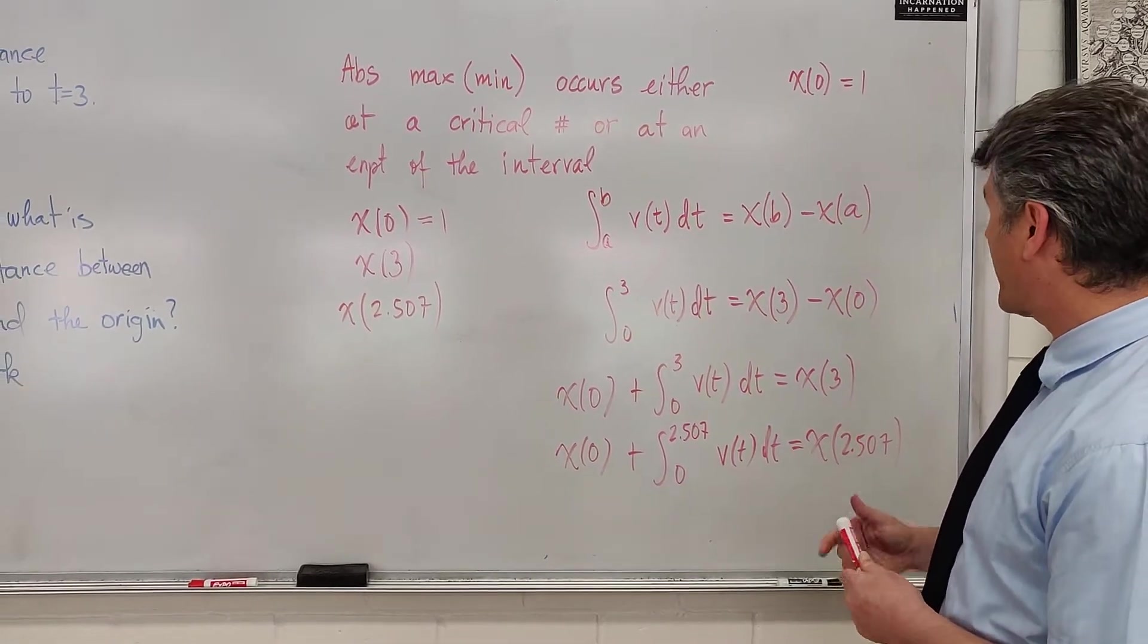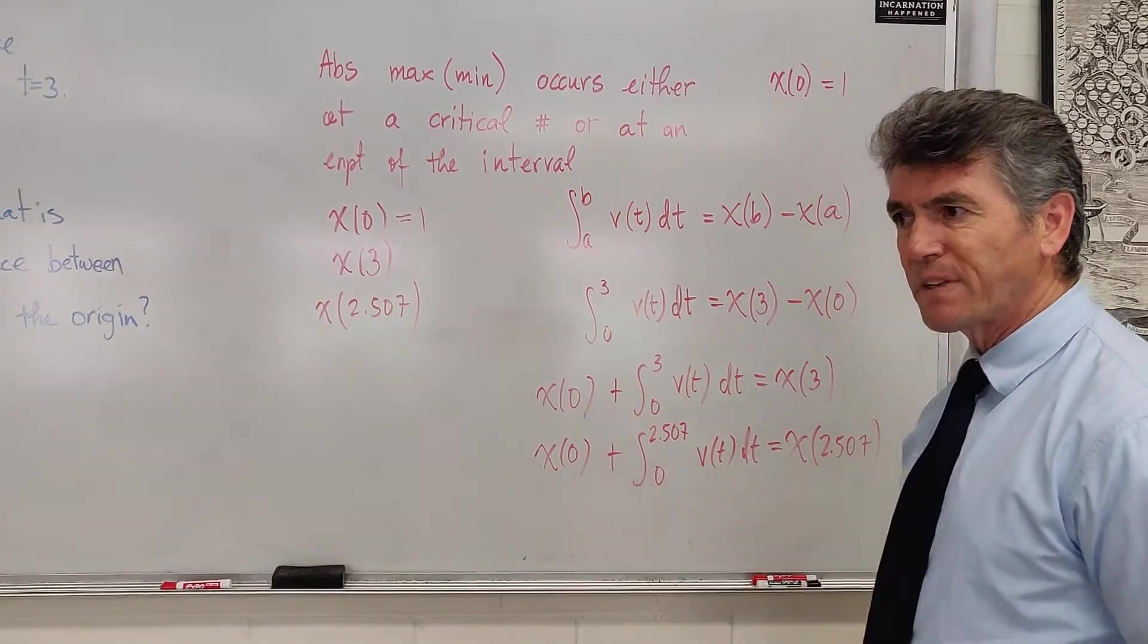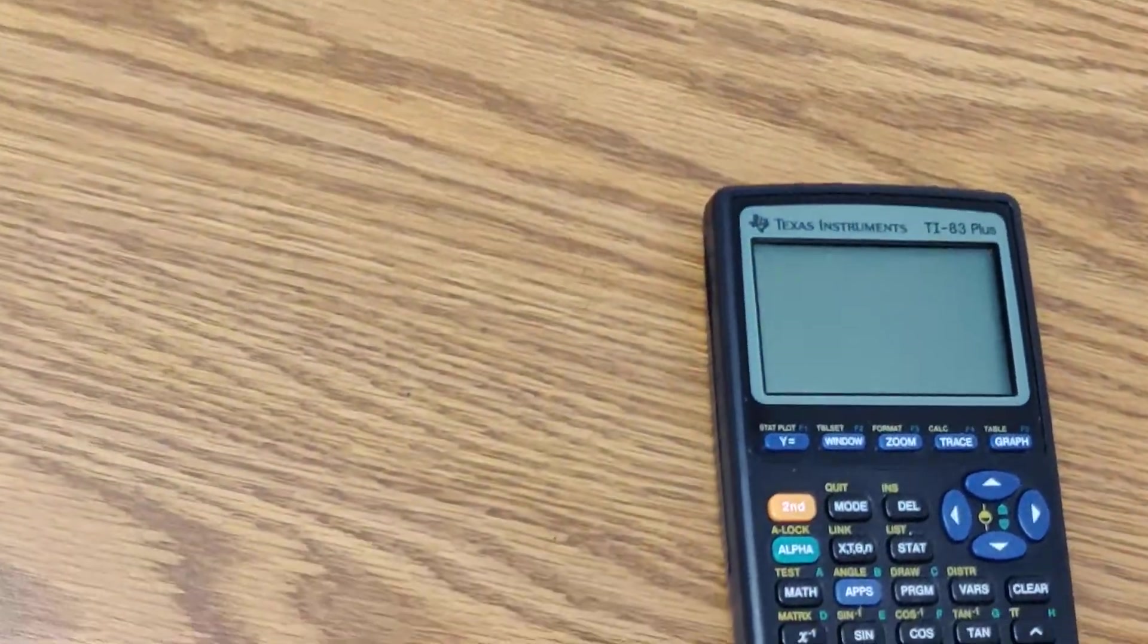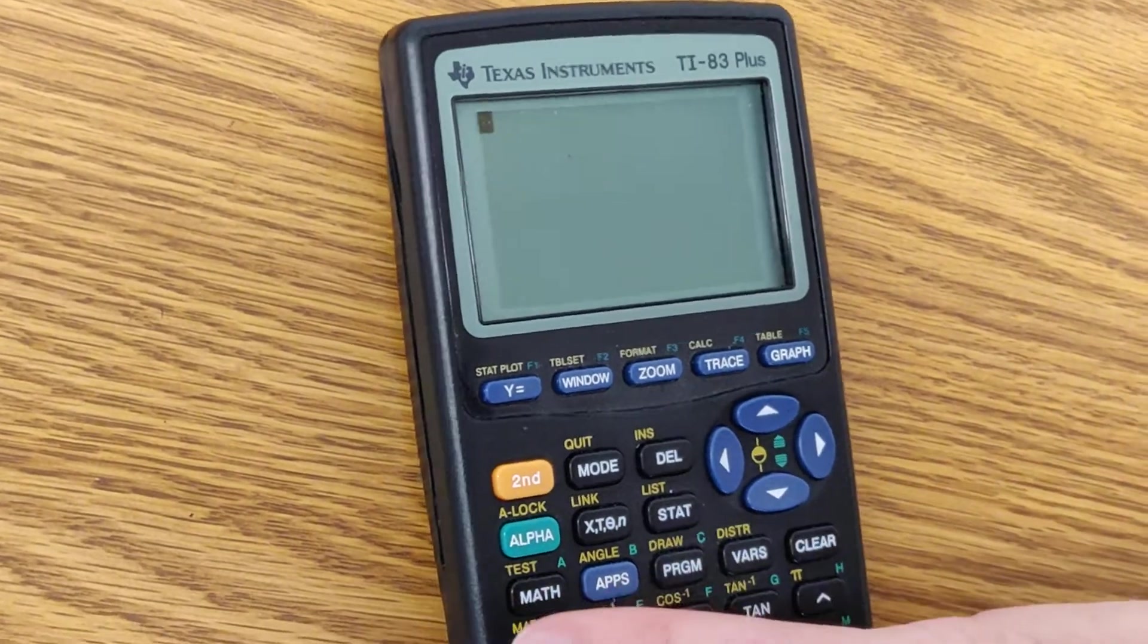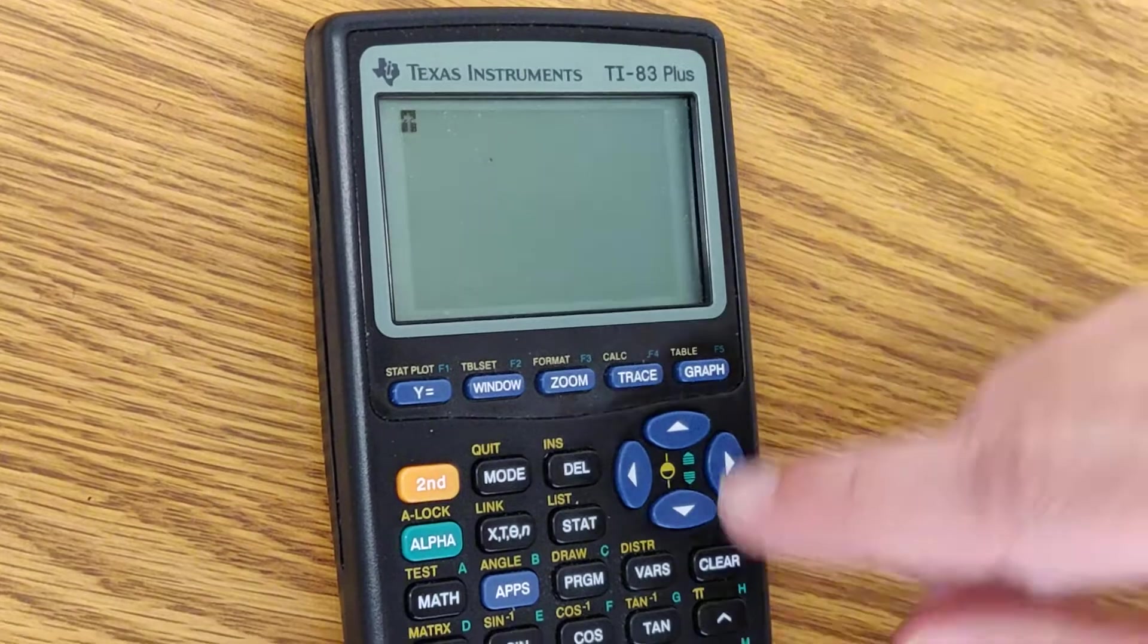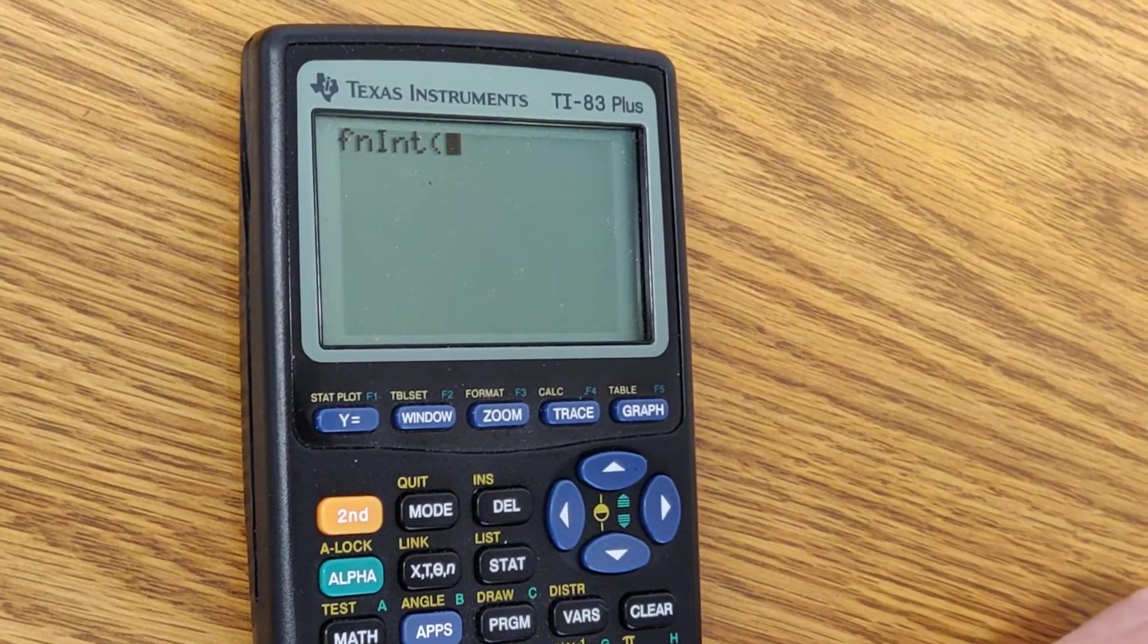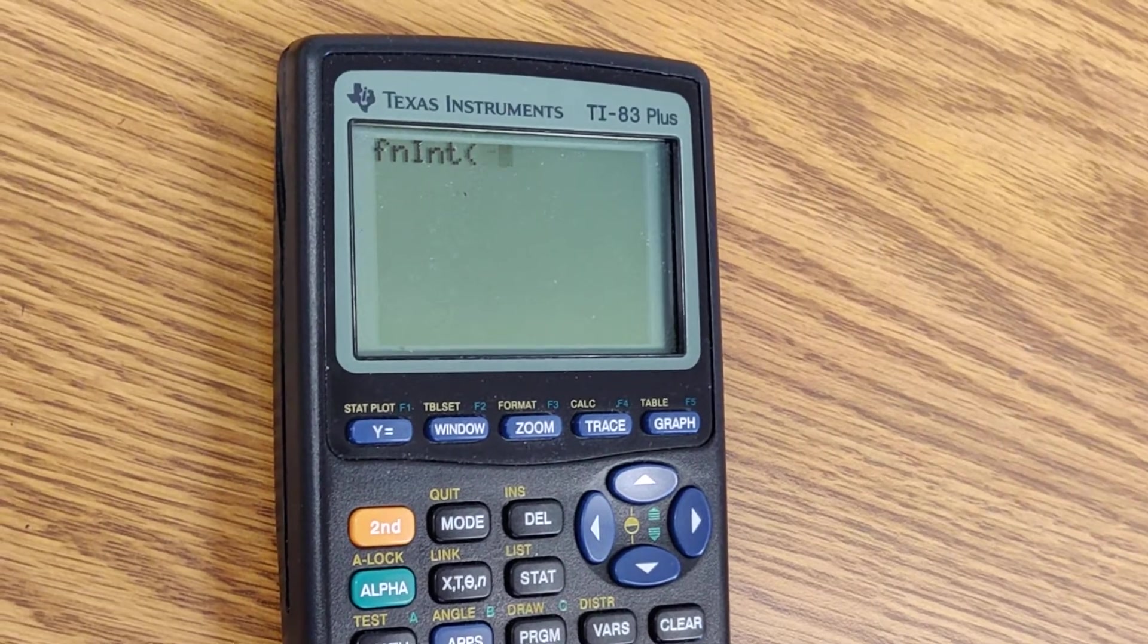We're going to use our calculator. We will remember that x of 0 is 1. So let's do this. I've prepared everything. Turn the calculator on. Clear all of this. Go. Second matrix. I'm sorry, not second matrix. Not even second math. F, n, i, n, t. Oh boy, I did prepare everything but I had nothing better to do than erase it.